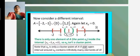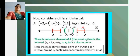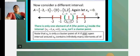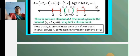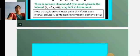Now consider a different interval: A equals the closed interval [-2, 1] union {0} union the closed interval [1, 2]. Again let x₀ = 0. There is only one element of A inside the interval (x₀ - δ, x₀ + δ), so x₀ is not a cluster point. Note that x₀ is only a cluster point of A if any open interval around x₀ contains infinitely many elements of A.